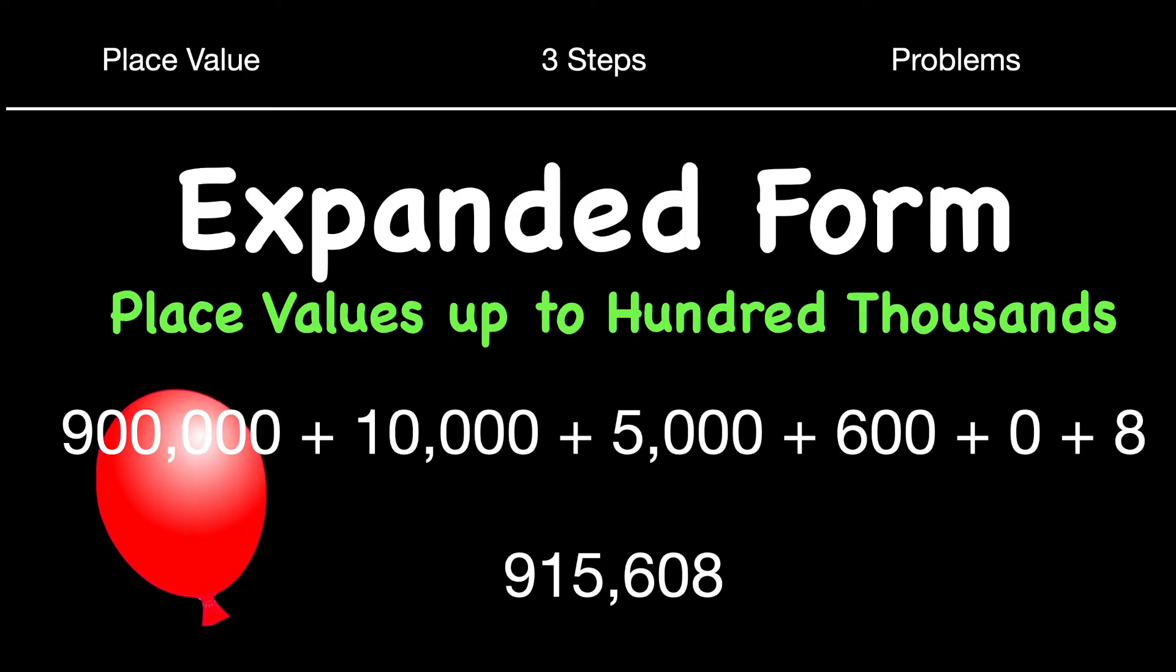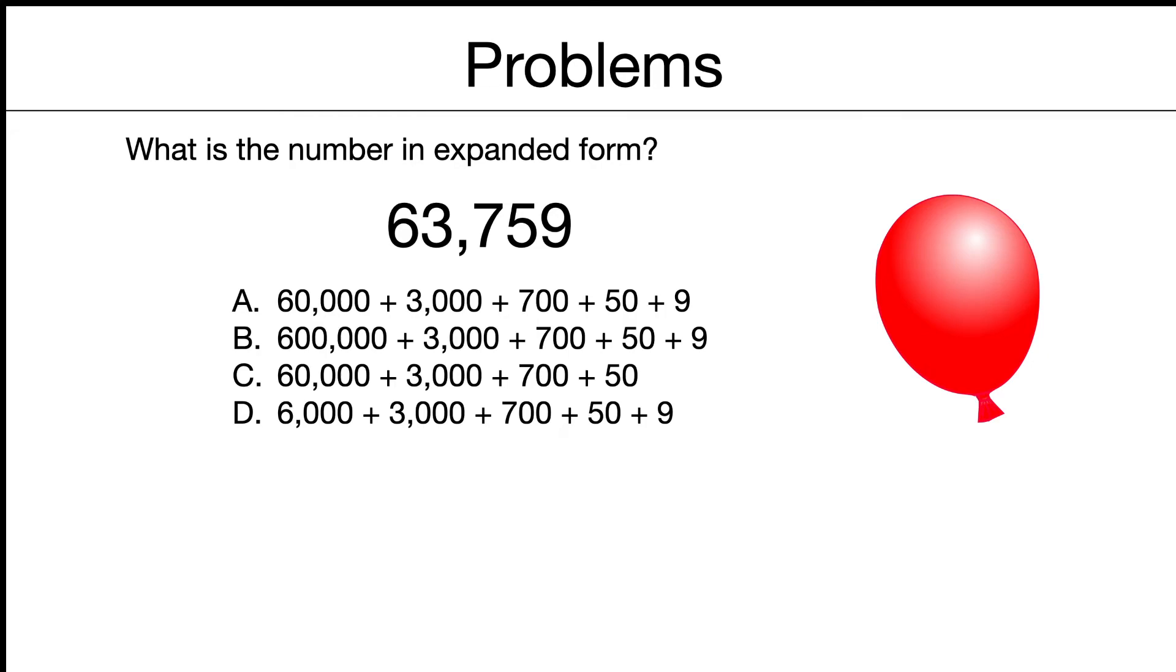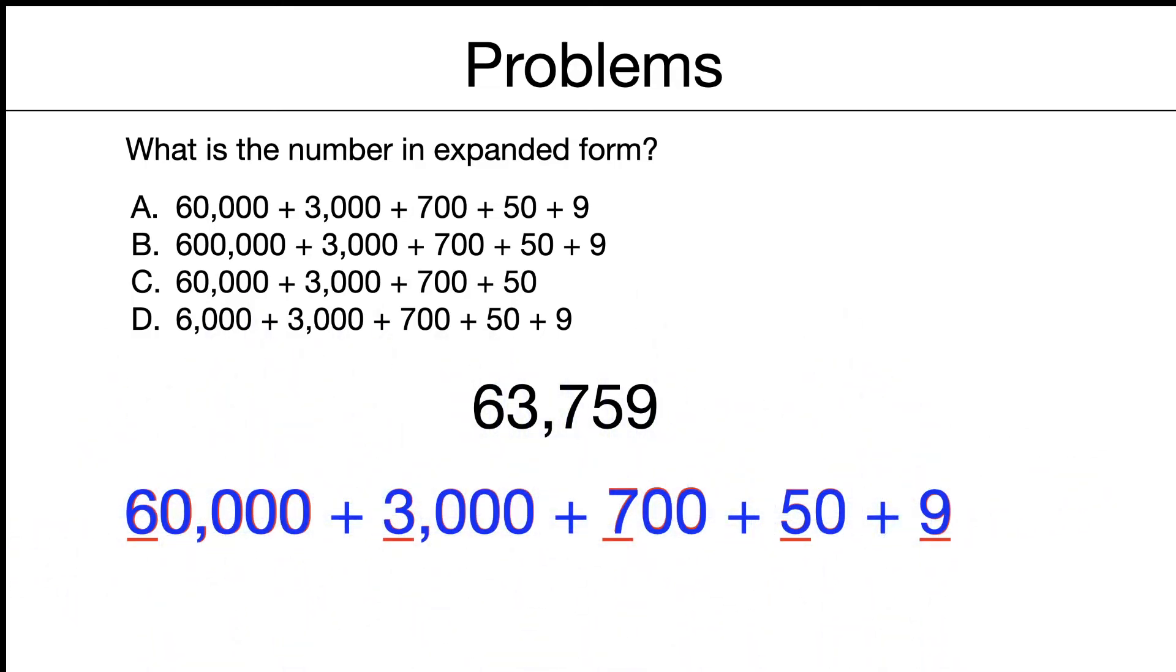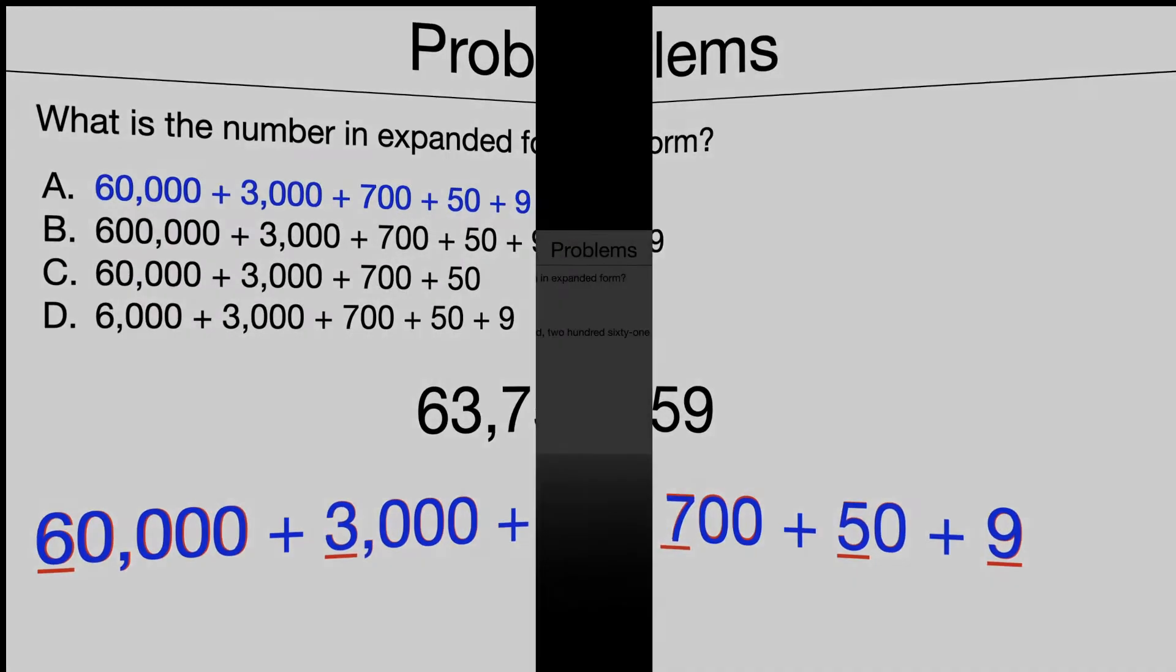What is the number in expanded form? 63,759. I'm counting a total of five digits. The six is 60,000, 3,750, and our nine ones. Let's put in our addition symbols. And that looks to me like it's going to be A in expanded form.